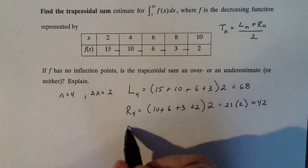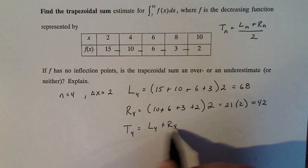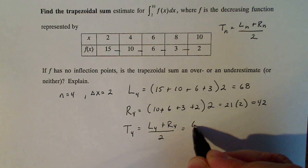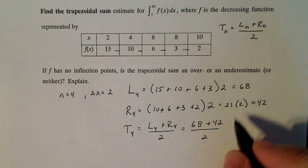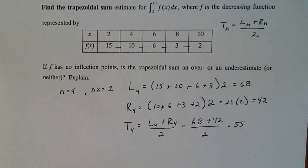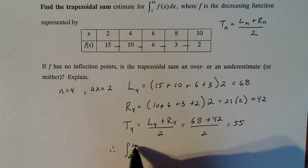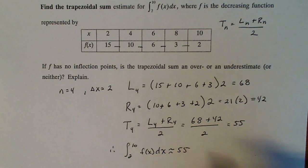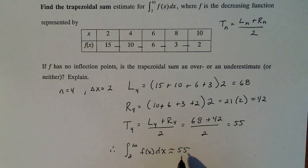So the trap sub four is going to be left sub four plus right sub four divided by two — just average them — and that's equal to 68 plus 42 divided by two, which equals 55. Always conclude: therefore, the integral from two to ten of f of x dx is approximately equal to 55, because the problem asks us to estimate it with a trapezoidal sum.